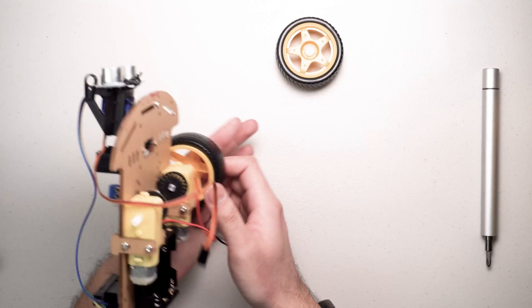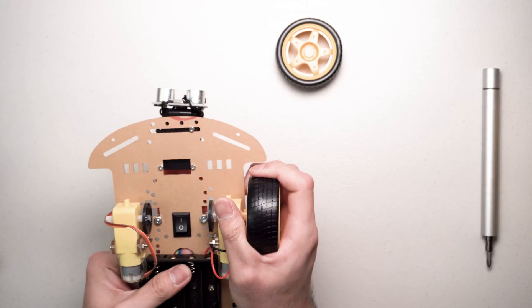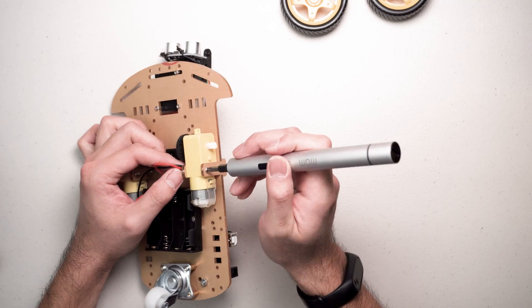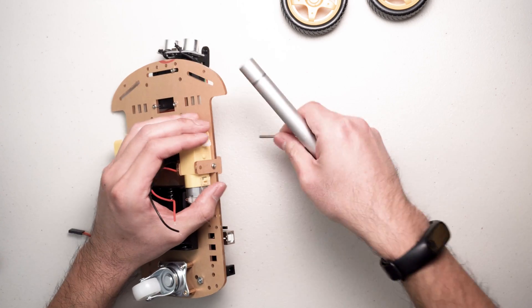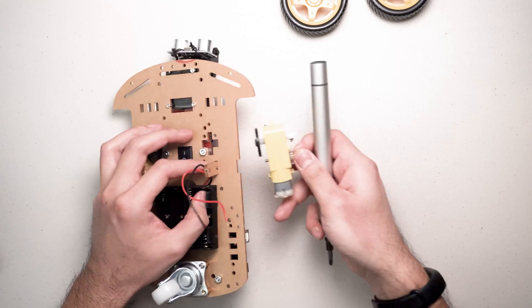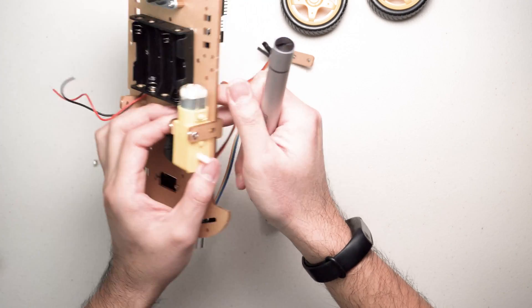The next step is to solder wires to the motors. We have to disassemble both the motors first. The powered screwdriver I got lately is really fun for disassembling and you can check my review video in description.